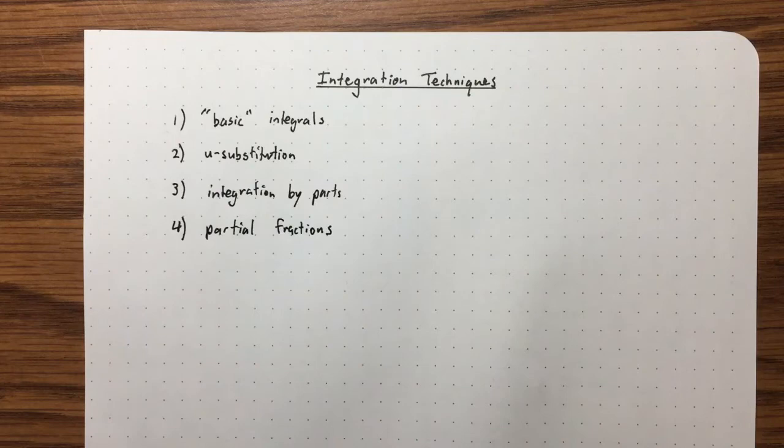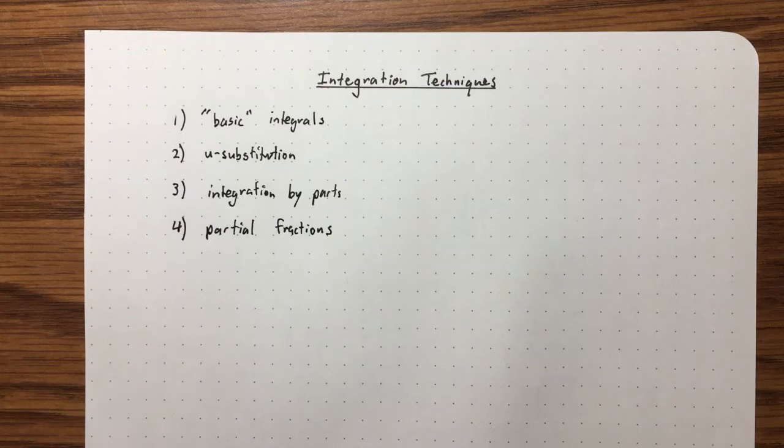Another notable technique that I'm not going to talk about is trigonometric substitutions. Those tend to be only useful in maybe a few situations where you have a very specific form of the integral, and honestly, when you have that form, it's best to just look up in a table what the answer is. So just to make the video a little bit shorter, I'm going to omit trigonometric substitutions.